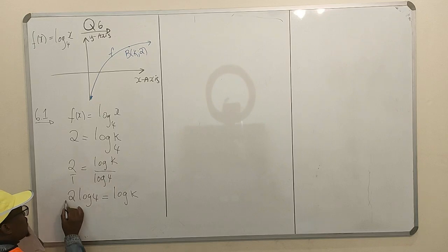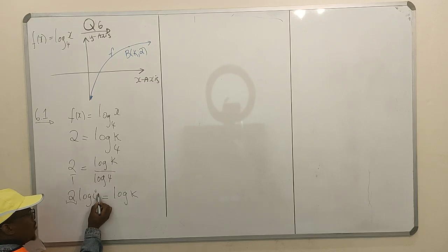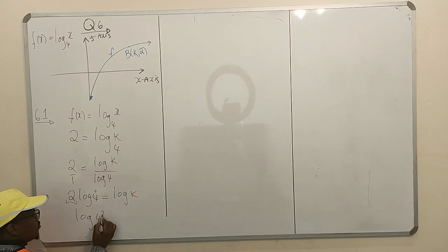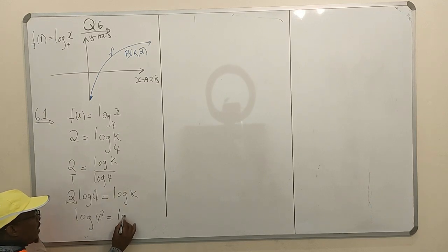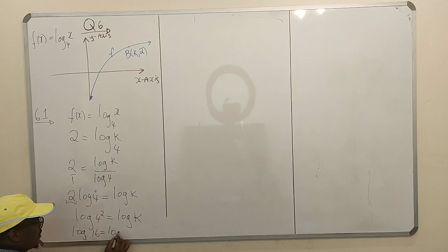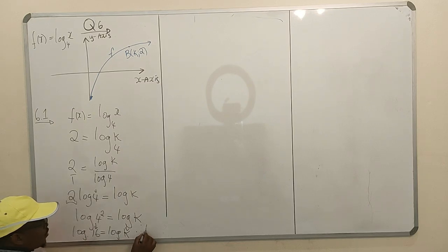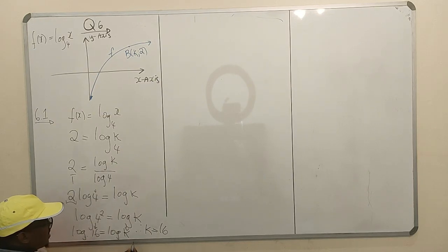In a situation where you have your 2 here and your log inside, this 2 was originally a power of this 4. This was log 4 raised to 2, which equals log k. From your exponent laws, which means you have log 16 equals log k.